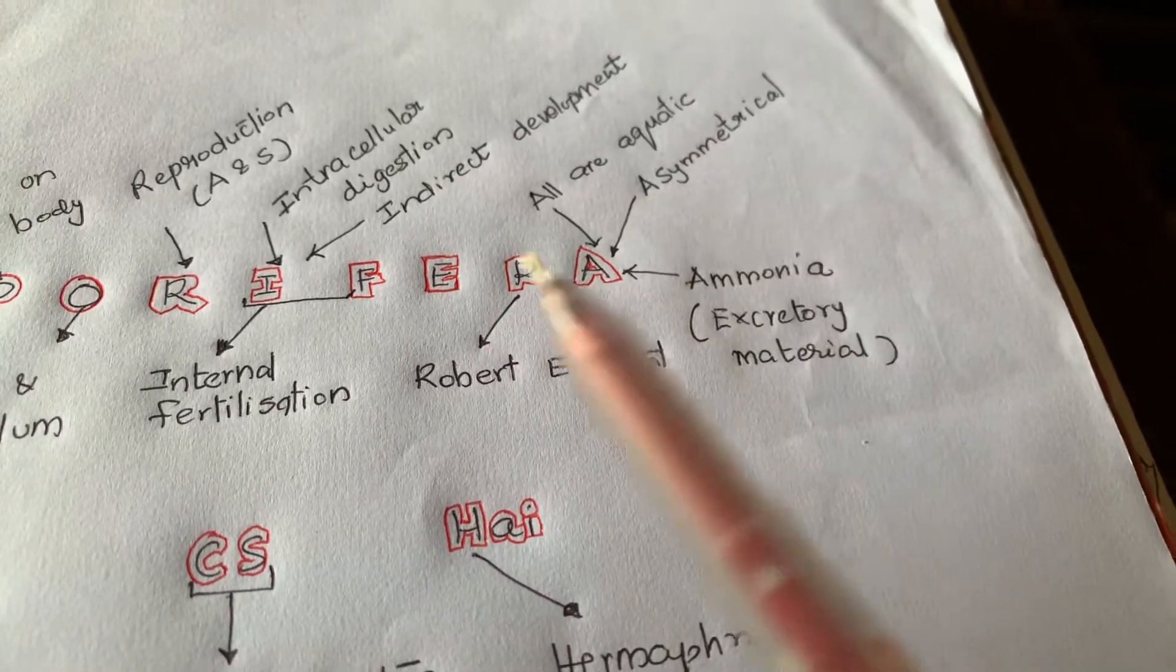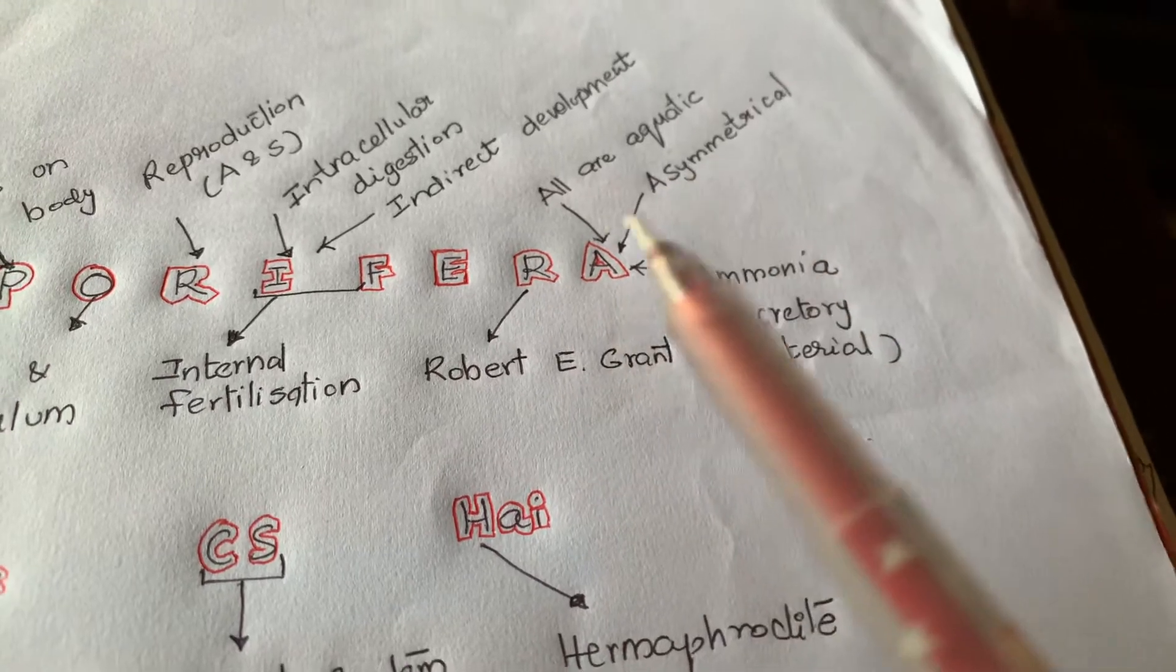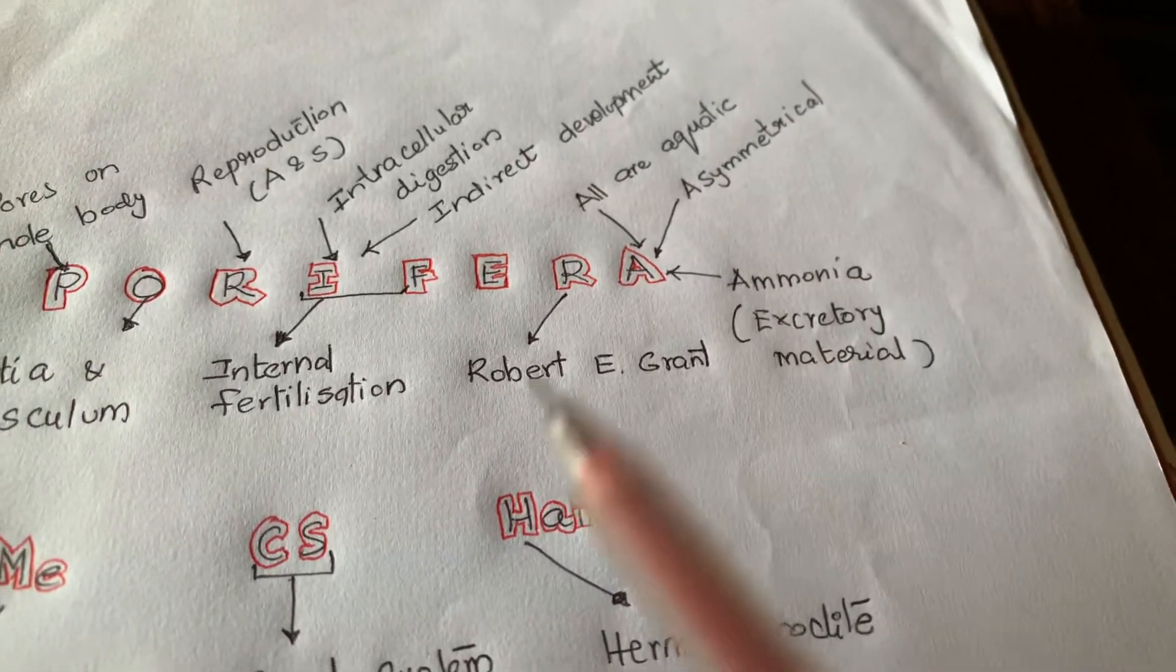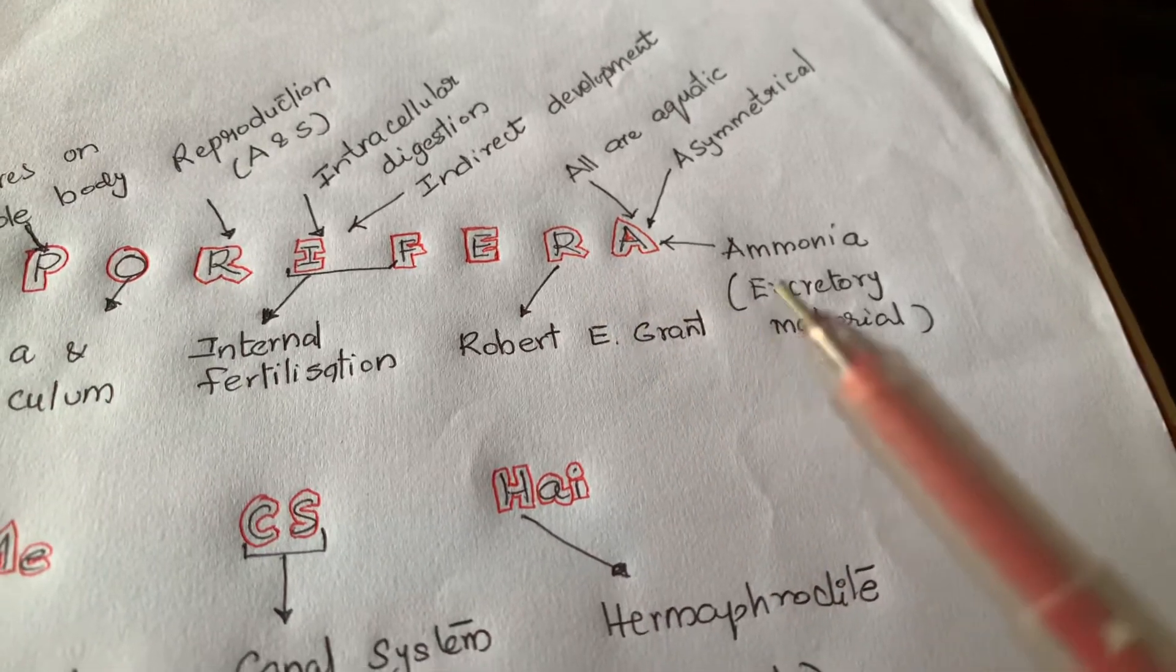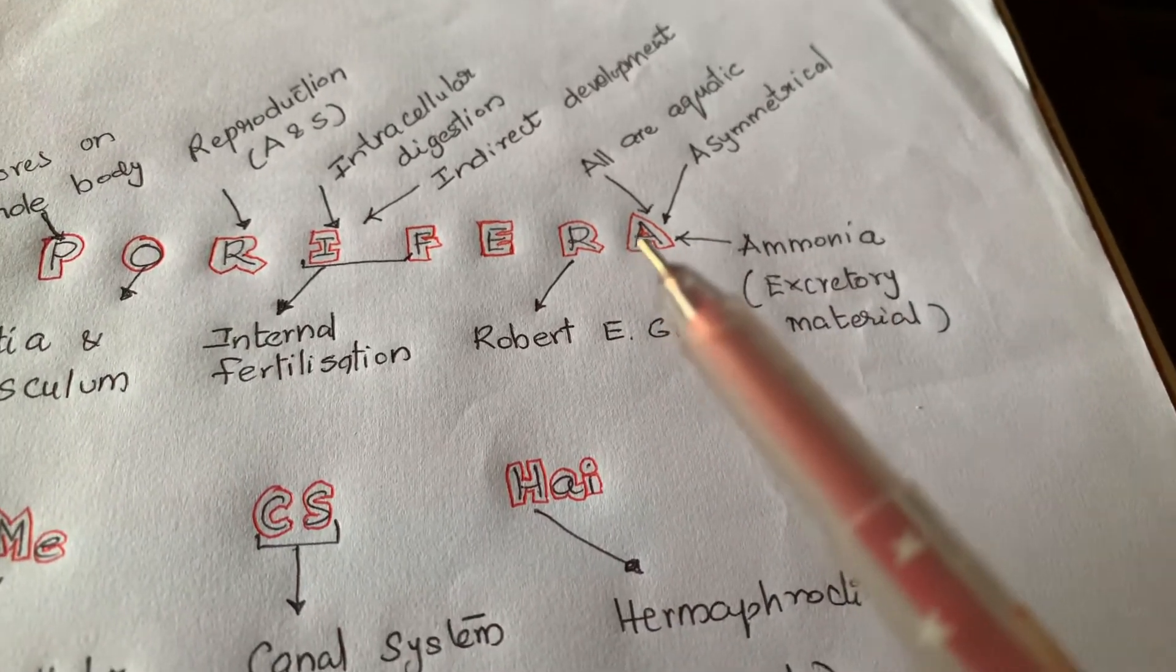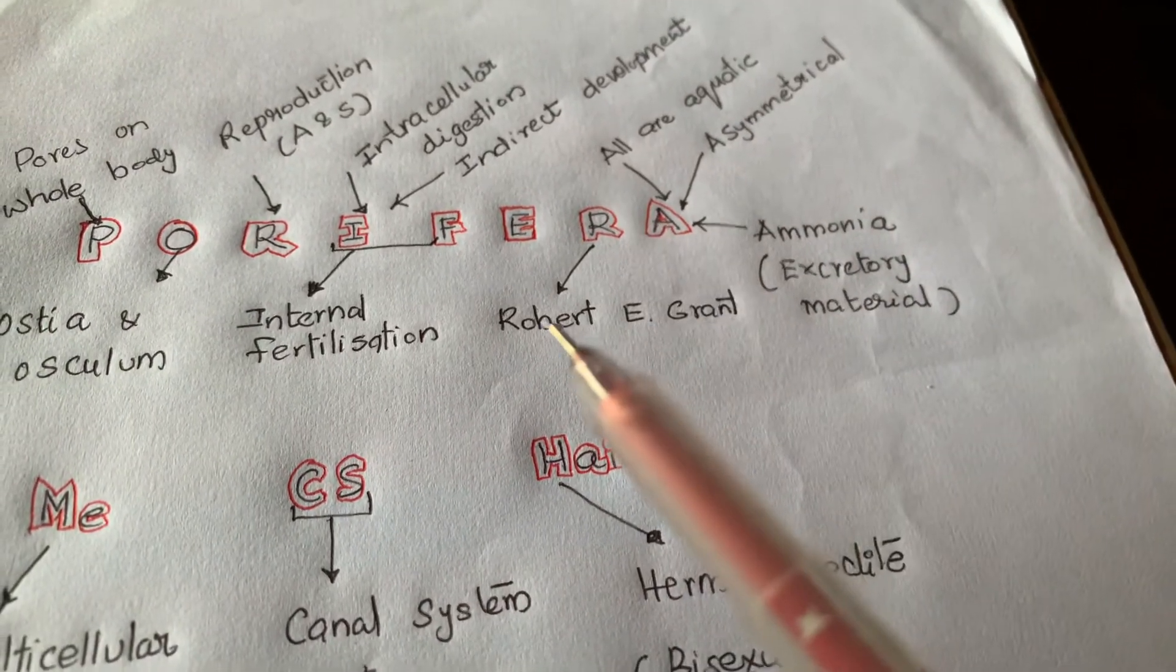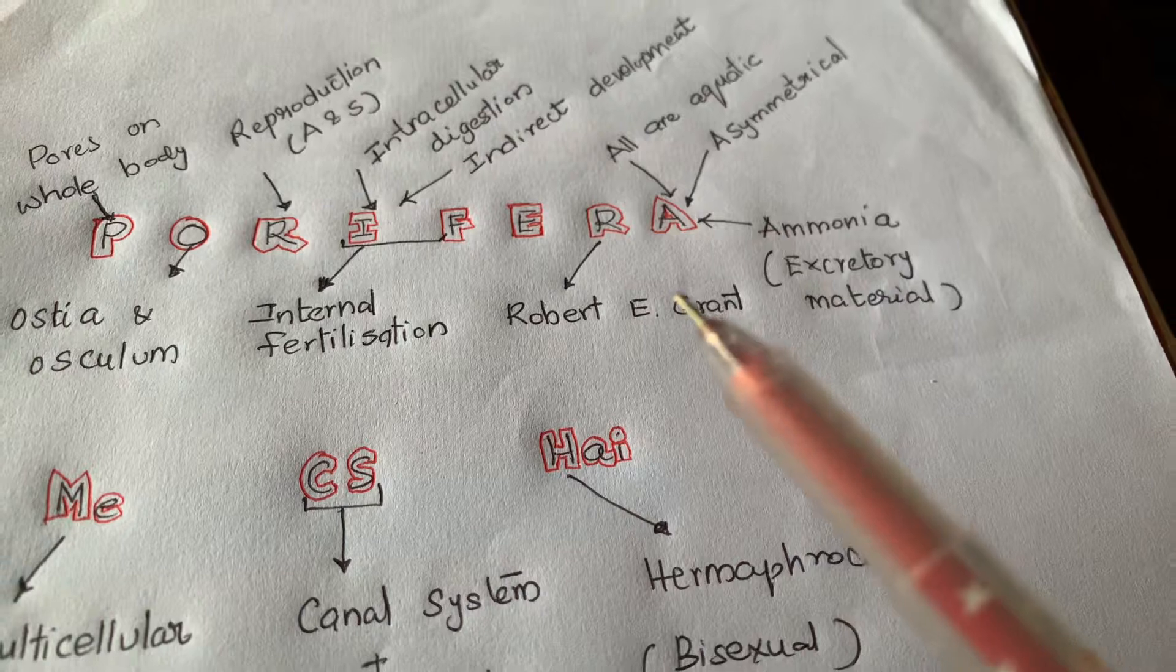These are all asymmetrical. They have no symmetry - we cannot divide the body into two halves. And in aquatic forms generally the excretory material will be ammonia. So by taking A letter: all are aquatic, asymmetrical, ammonia, or Robert E. Grant.